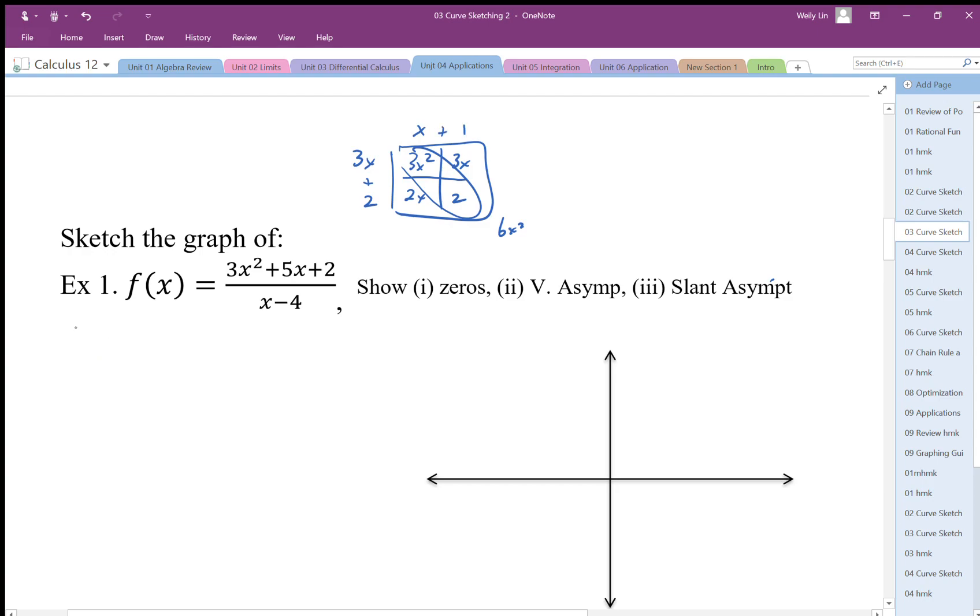When I factor it, my f(x) is equal to (3x + 2)(x + 1) all over x minus 4. So I have my zeros are going to be at x equals negative 2/3 and negative 1.